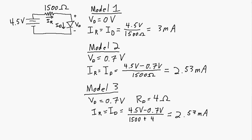If we used more significant figures, we'd see a difference between Models 2 and 3 — you can verify that on your calculator. But it shows that Models 2 and 3 are quite similar. Since Model 3 is more complicated, we can just use Model 2 for most approximations and ignore the bulk resistance of the diode.